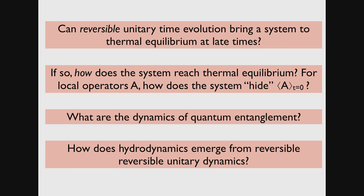How does this information — the expectation value of the operator at the initial time — get hidden? This operator started off with some value at t equals zero, and then we did time evolution, and at late times it forgets all memory about the initial condition. So how does that happen under unitary time evolution in some concrete sense?